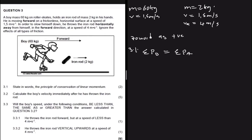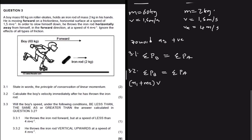For 3.2, we apply the conservation of momentum: the sum of momentum before equals the sum after. The momentum before is the mass of the boy plus the mass of the iron rod, both moving at the same velocity. The momentum after is the mass of the boy times the boy's velocity, plus the mass of the iron rod times the rod's velocity.